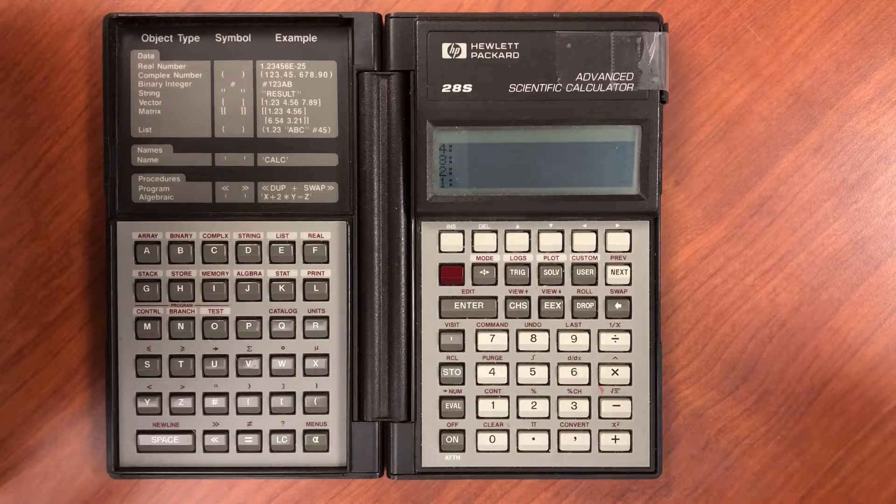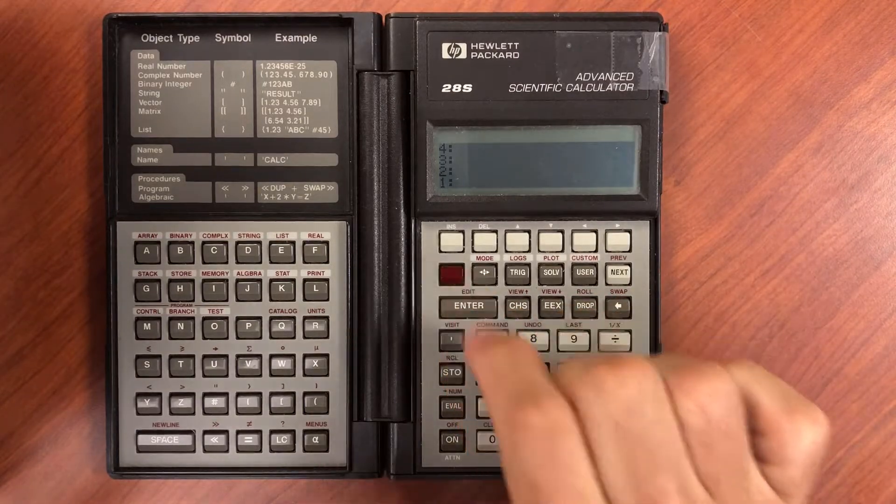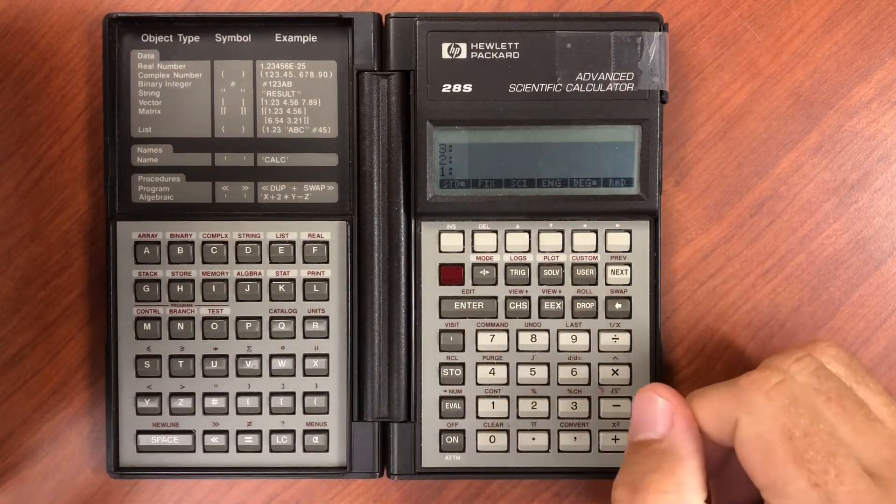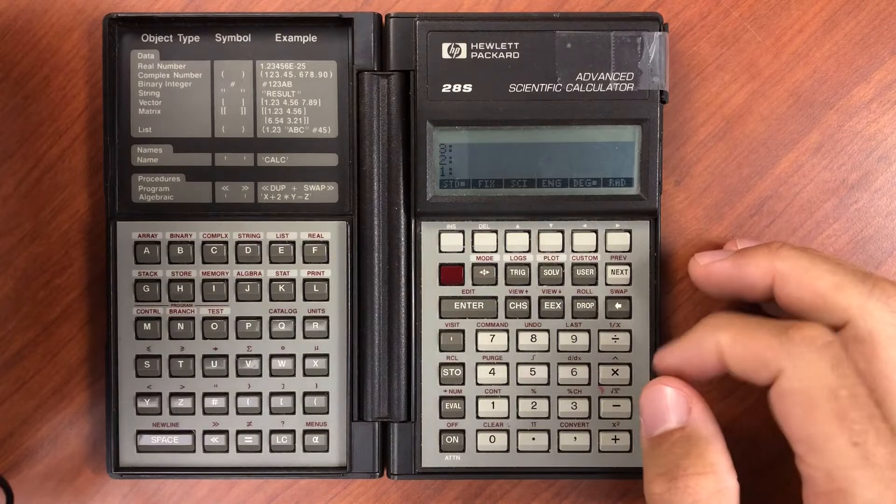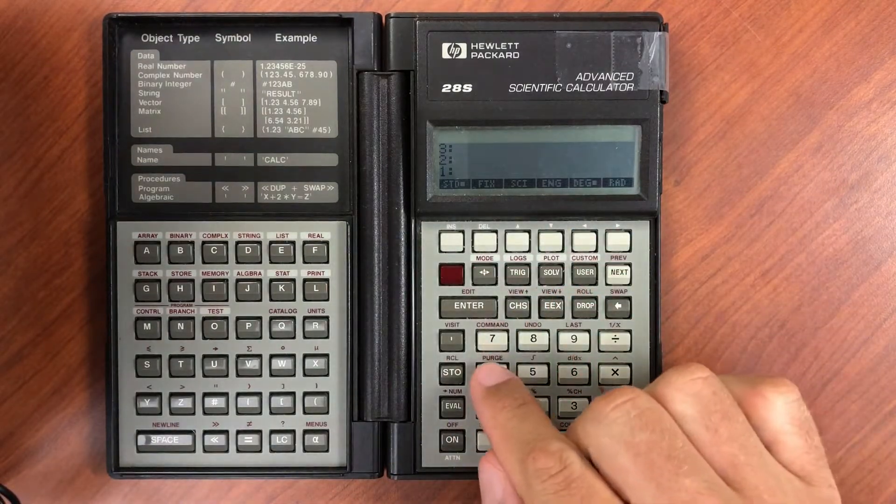I wanted to cover the mode menu very briefly. The mode menu can be accessed by going to shift mode, and you'll see the regular array of options for how you display numbers.